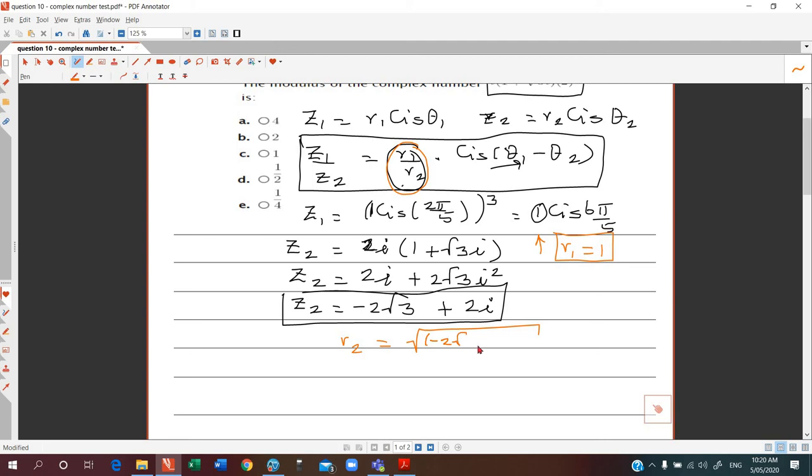(-2√3)² plus 2². This is going to be square root of what? This is 4 times 3 which is 12, plus 4, which is square root of 16, which is 4. So r2 is basically 4.